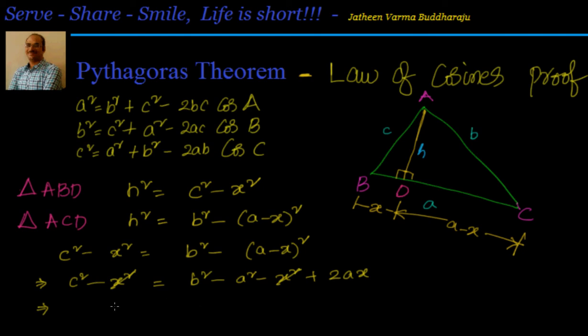Now we can cancel x². Then I will have c² = b² - a² + 2ax. So what I will do, I will say b² = c² + a² - 2ax.